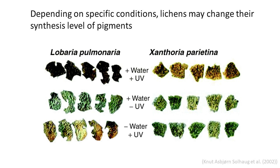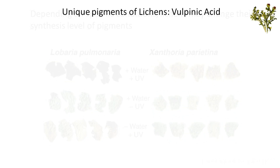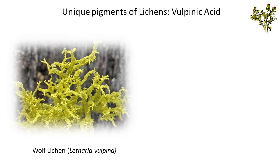Interestingly, both lichens kept without water were not able to develop adequate pigment protection against UV light. As a consequence, damaged areas and chlorophyll bleaching were observed.